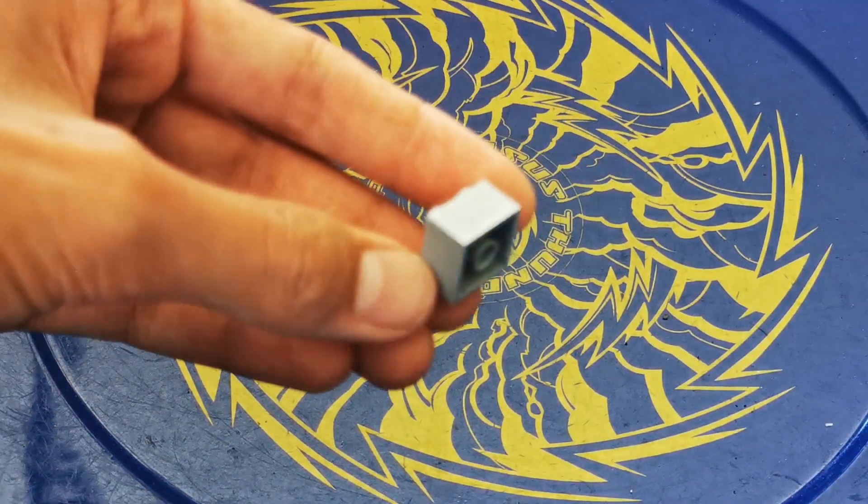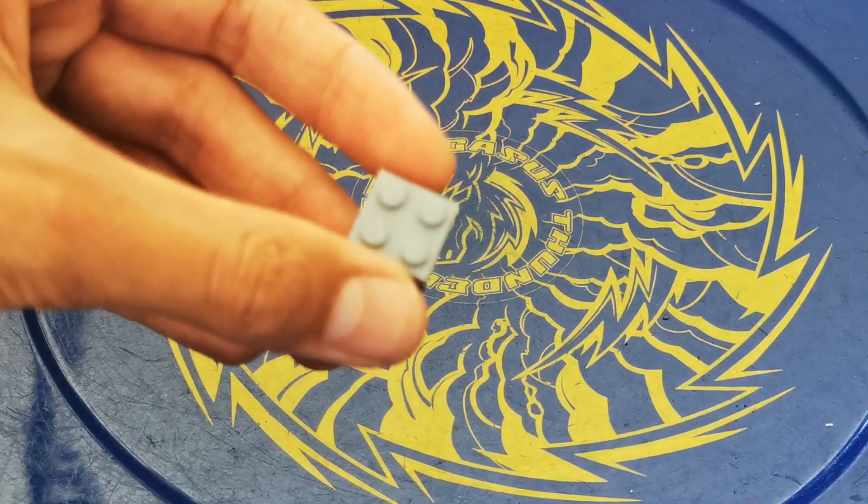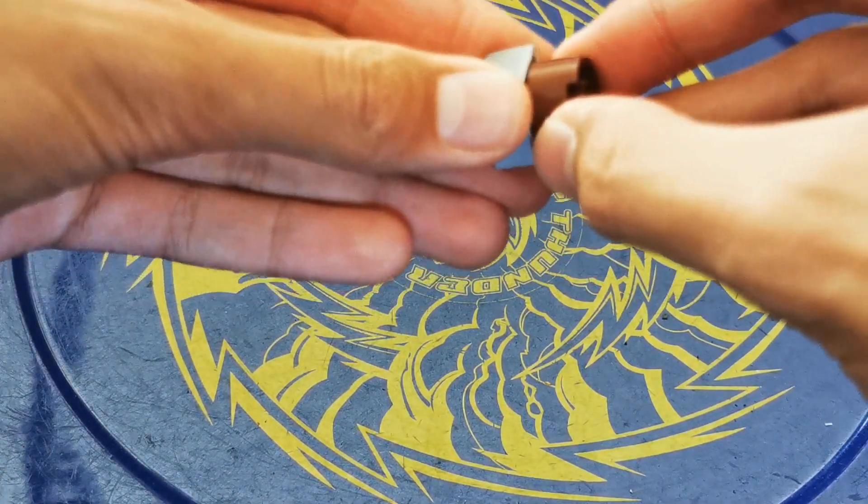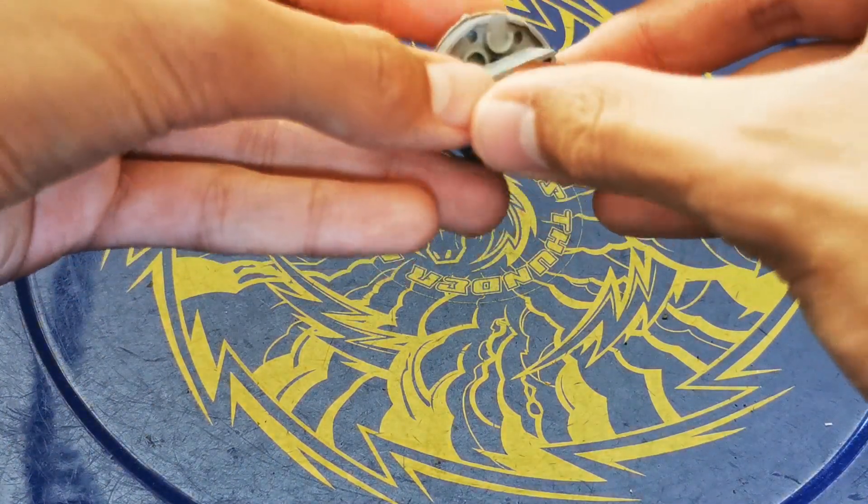For the system, get a 2x2 brick, then attach a 2x2 cylinder brick to the bottom. Then you can attach this to the chip.